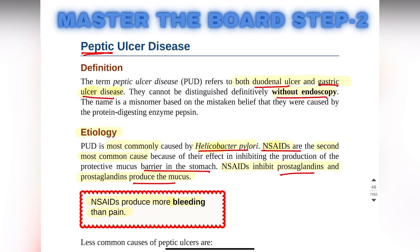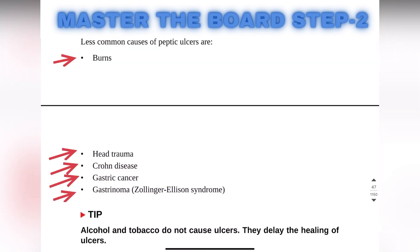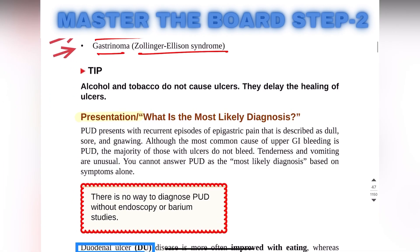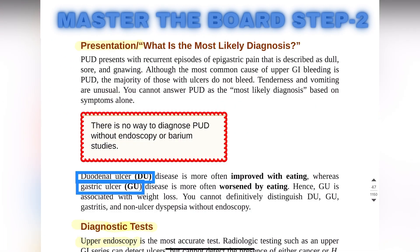The less common causes of peptic ulcer disease are burns, head trauma, Crohn's disease, gastric cancer, and gastrinoma — also called Zollinger-Ellison syndrome. A patient with peptic ulcer disease will present with recurrent episodes of epigastric pain.